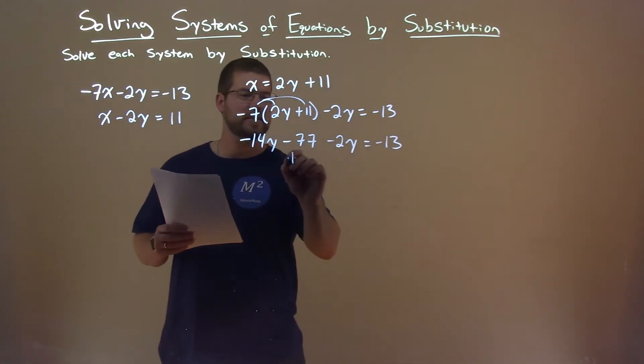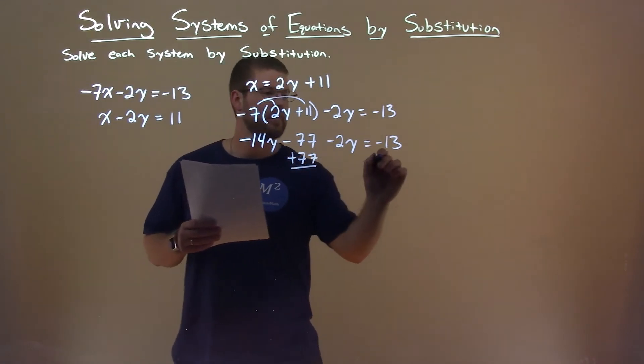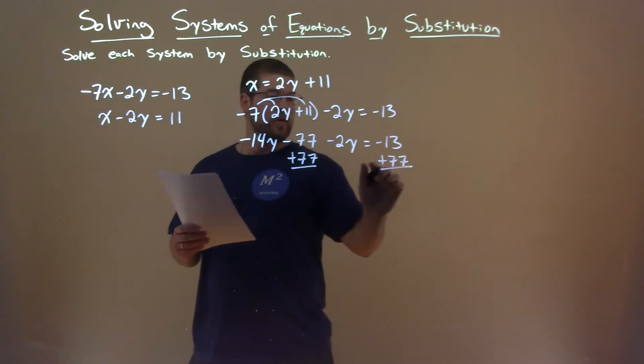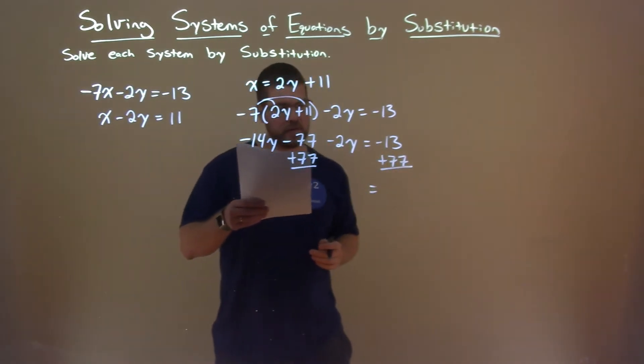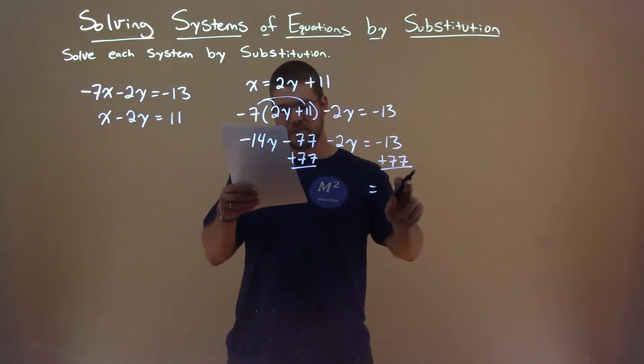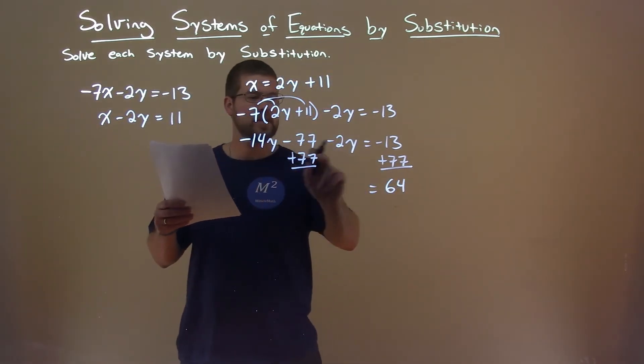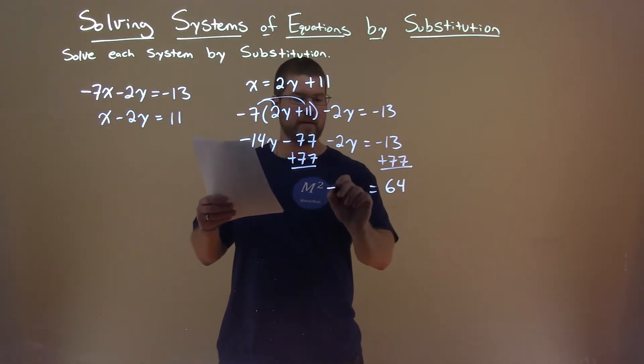We can add 77 to both sides, and we're left with, on the right-hand side, minus 13 plus 77, which is a positive 64. Combine the minus 14y and minus 2y, and we have a minus 16y.